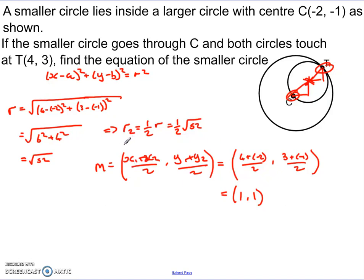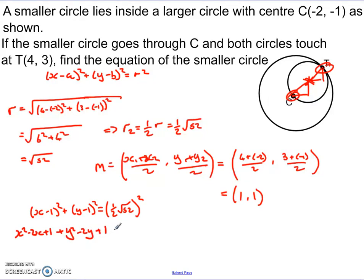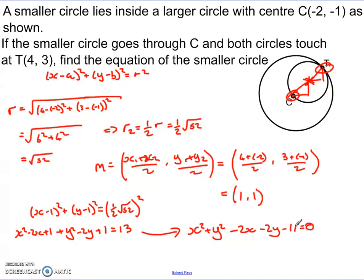I've got all the information I need, so I can put it all in: x minus 1 squared plus y minus 1 squared equals r squared, which is (one half times root 52) squared. Expanding the brackets: x squared minus 2x plus 1 plus y squared minus 2y plus 1 equals one quarter times 52, which is 13. Setting it equal to 0: x squared plus y squared minus 2x minus 2y plus 1 plus 1 minus 13 equals 0, giving x squared plus y squared minus 2x minus 2y minus 11 equals 0.